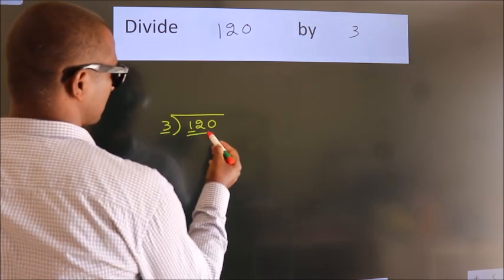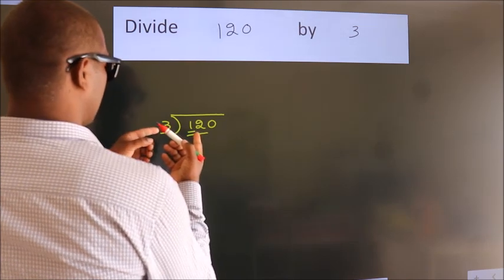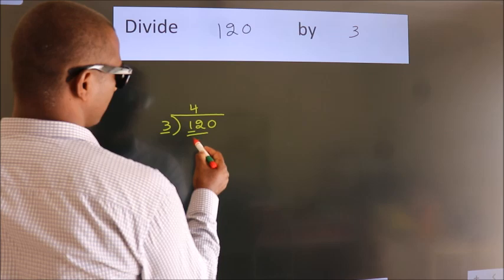So we should take 2 numbers, 3 fourths, 12. When do we get 12? In 3 table, 3 fourths, 12.